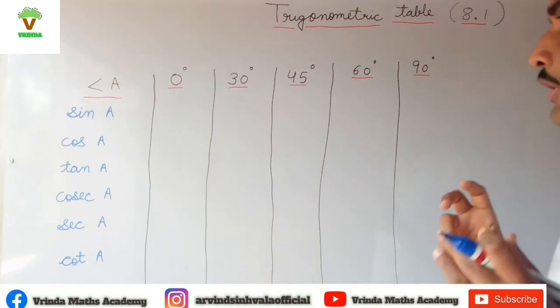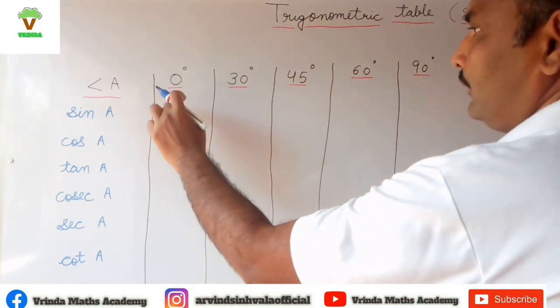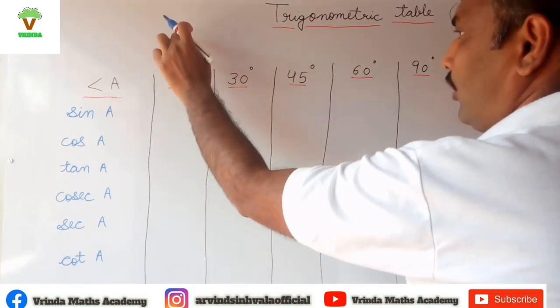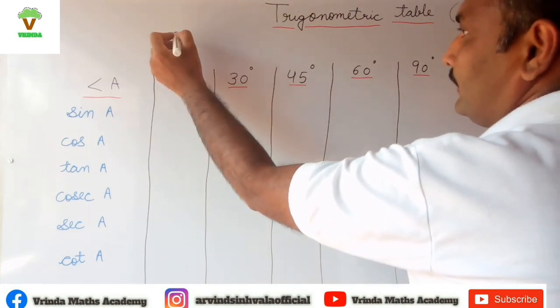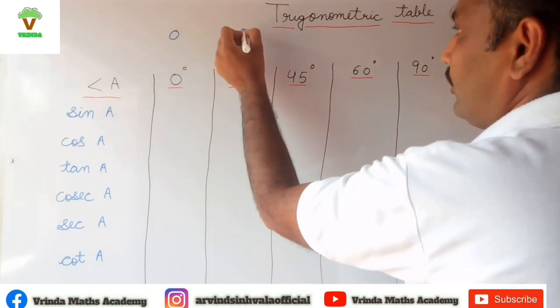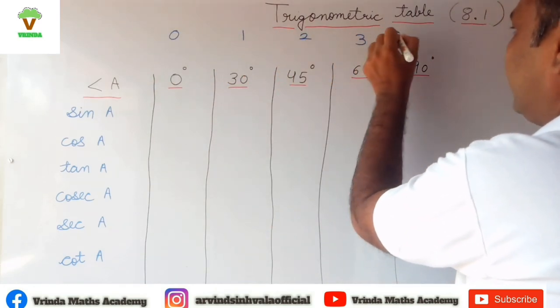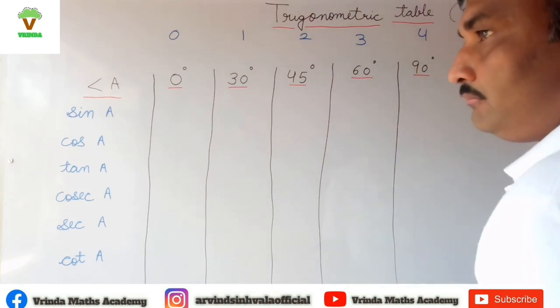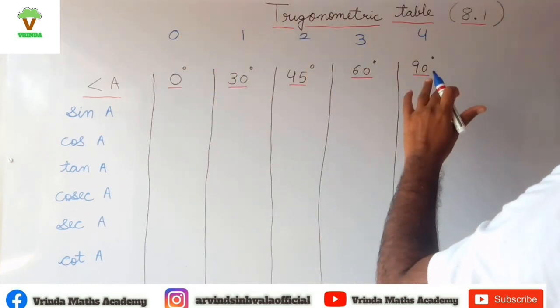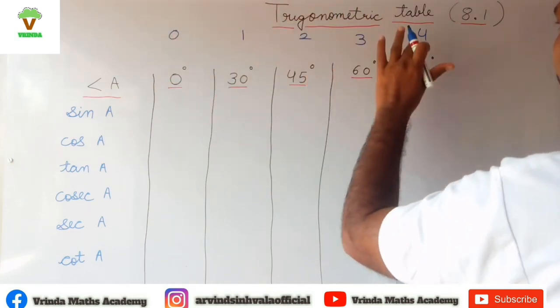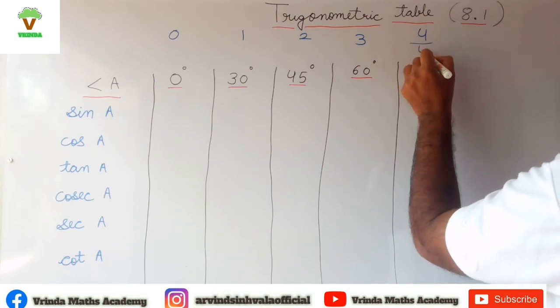First of all, you have to start writing the numbers from zero: 0, 1, 2, 3, and 4. After writing numbers from 0 to 4, start dividing all the numbers by 4.